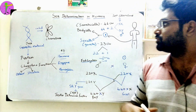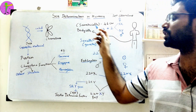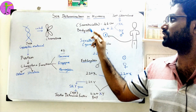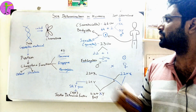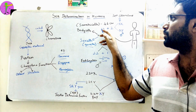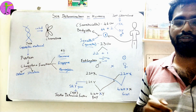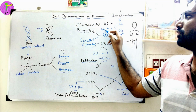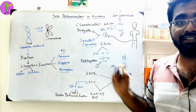Now let's talk about chromosomes and chromosome numbers. There are two types of cells. One is body cells, that is somatic cells. Body cells have 46 chromosomes — 23 pairs. That is 44 autosomes plus 2 sex chromosomes.